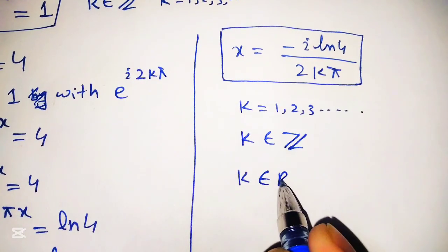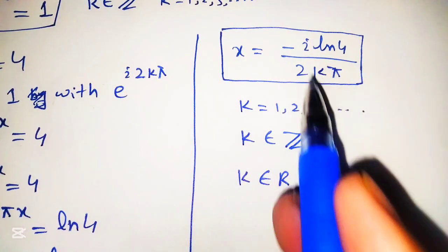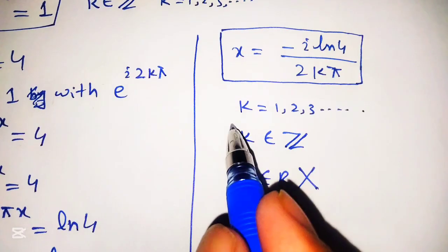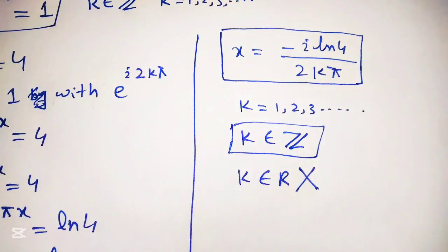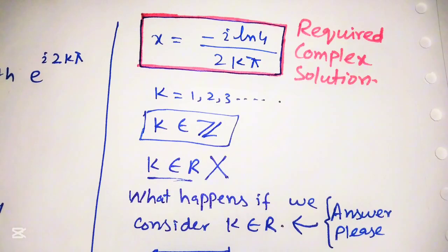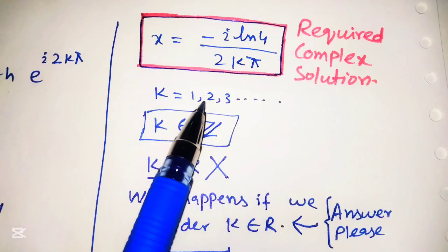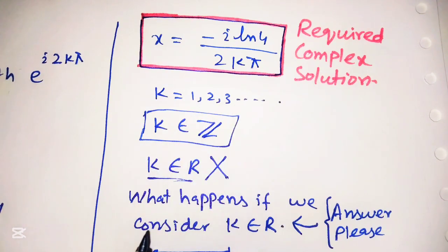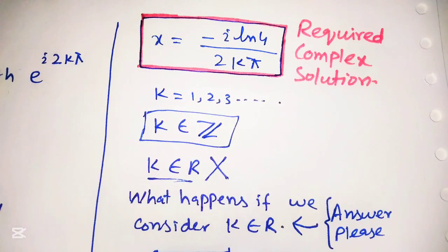If k belongs to the real numbers, we cannot use this solution because it is only valid when k belongs to integers and k equals 1, 2, 3, and so on. This is the required complex solution of the given equation. After watching this video, please share in the comments what happens if we take k belonging to the real numbers. Thank you for watching — please subscribe to my channel for more interesting videos.